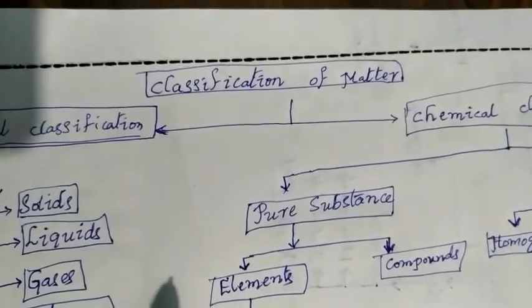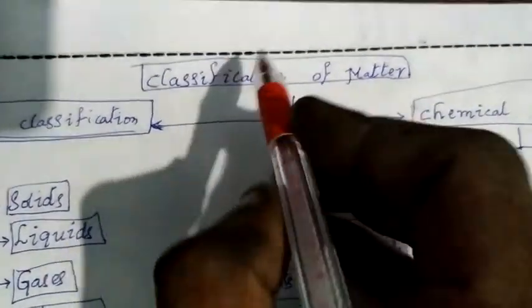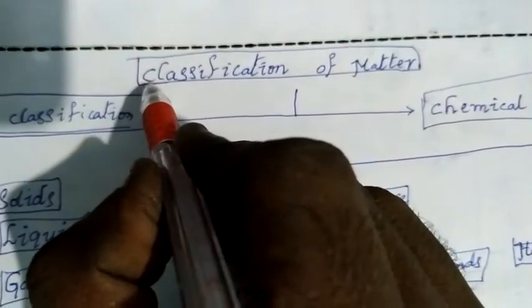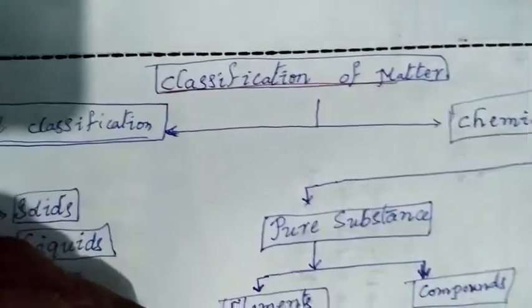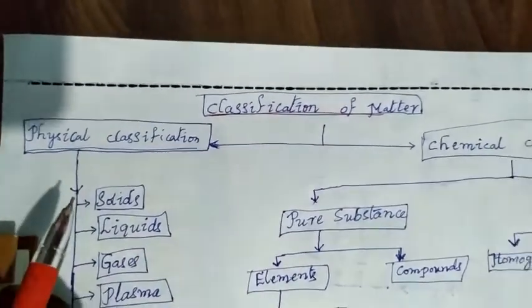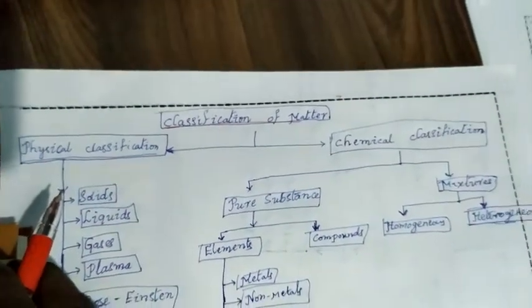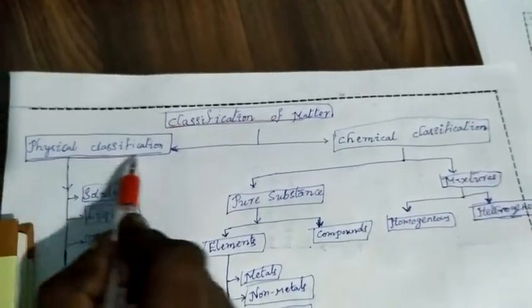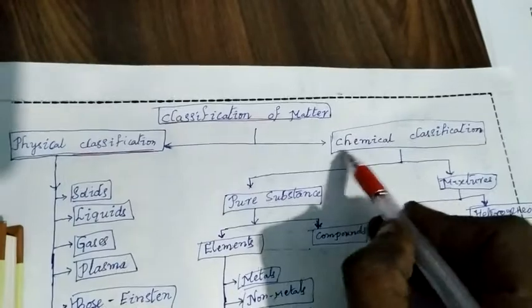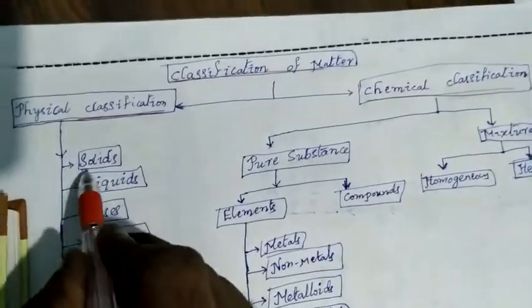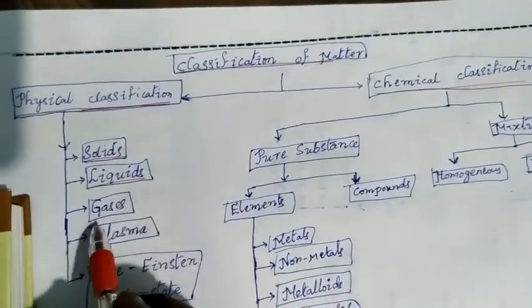Hi friends, good morning. Today we'll discuss the classification of matter. Matter is classified into two types: one is physical classification, and another is chemical classification.